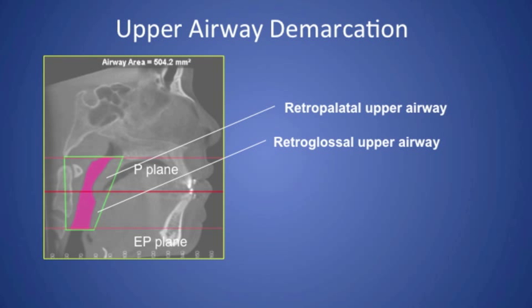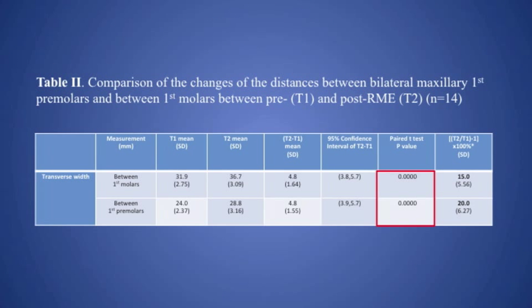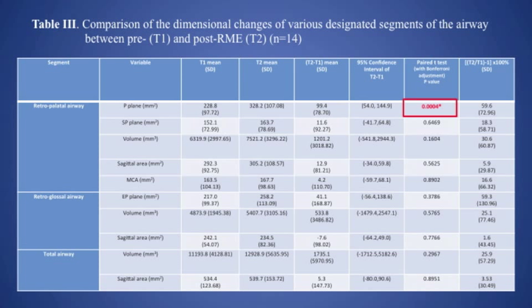To evaluate airway changes, we measured both the cross-sectional areas and the volumes at the designated levels. As a result, we found that RME produced an equal amount of expansion at the first molar and first premolar levels. For the airway, all measurements showed huge standard deviations, suggesting big variability from patient to patient. Among all airway variables, only the cross-sectional area of the retropalatal airway at the superior level gained a significant increase of about 60 percent after RME therapy.